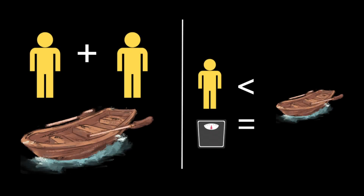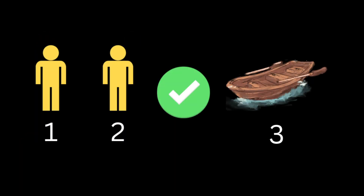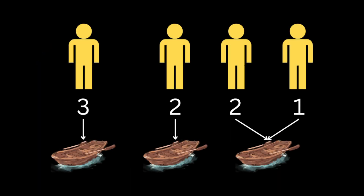Each boat carries at most two people at the same time, and every individual person has a weight lower than or equal to the limit. For example, if the first person weighs one and the second person weighs two, and the boat limit is three, the minimum number of boats is one, since one boat can carry the total weight of both people.